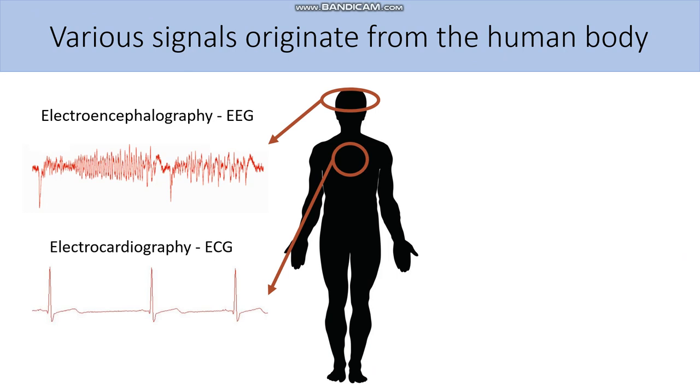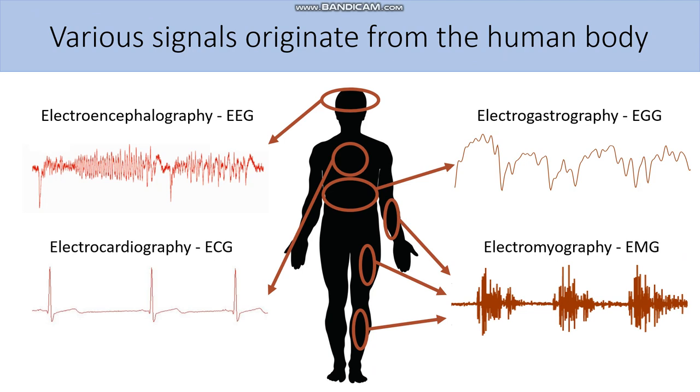Less commonly used electrogastrography or EGG is the signal that originates from the smooth muscle of the stomach. For us, it is very important because our research is based on interference between electrogastrography and nonstandard electrocardiography. We also have electromyography that originates from skeletal muscles.